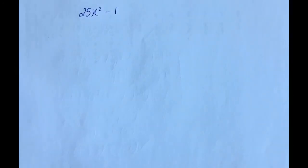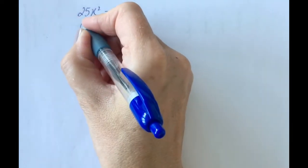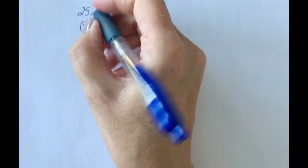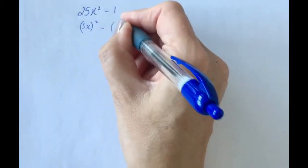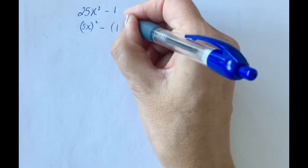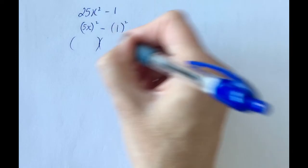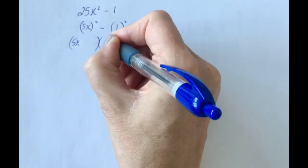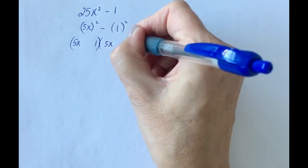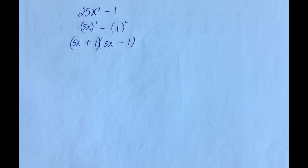Pause the video and try this one. What has been squared to get 25? The answer is 5, because 5 times 5 is 25. And to get x squared, we must have had x times x. Now what about 1? Well, 1 comes from 1 times 1, so 1 is a square number — 1 all squared. Now open up the brackets: 5x times 5x is 25x squared, 1 times 1 is 1, and a plus in one bracket and a minus in the other.